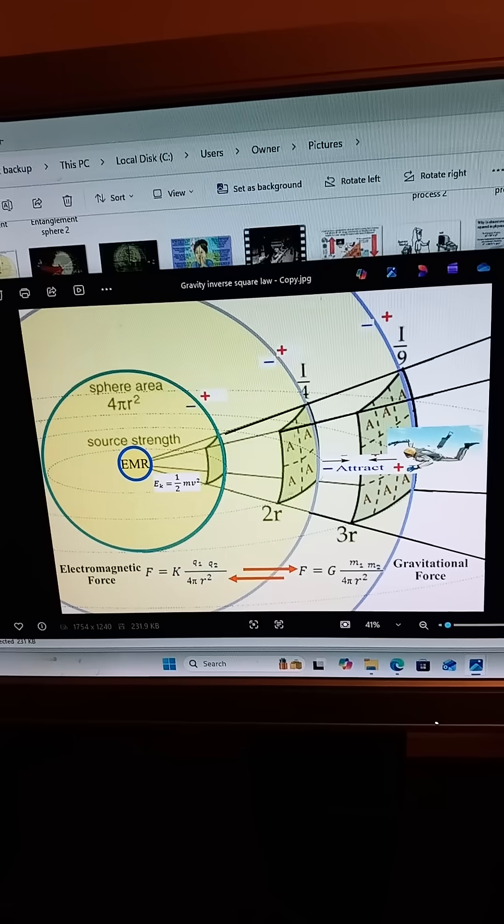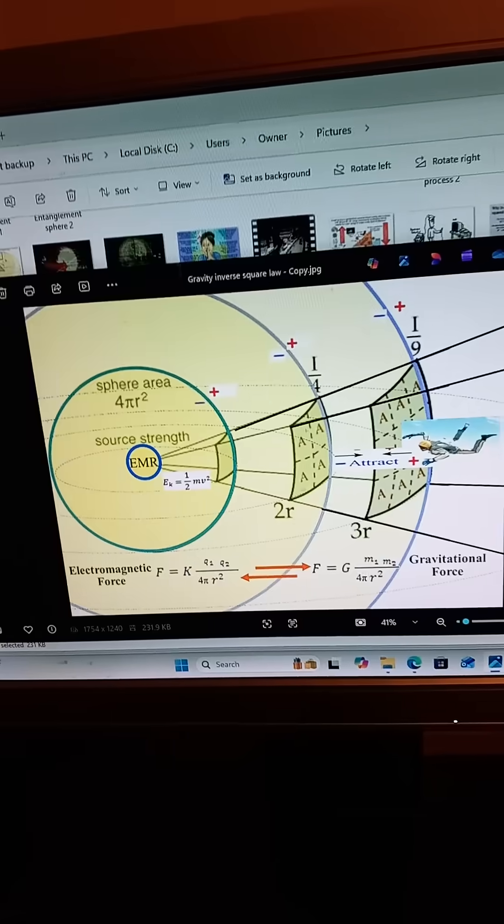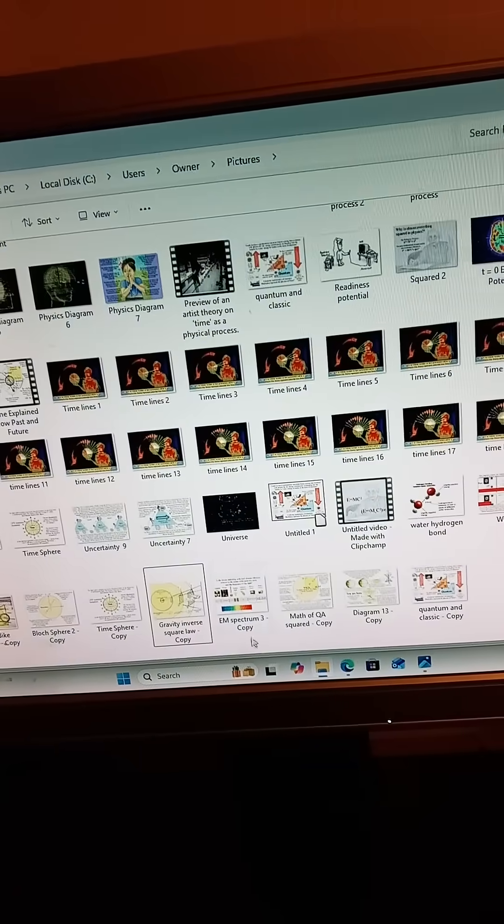Changing motion means re-phasing many interactions at once. The more matter something has, the harder it is to change its rhythm. That resistance is mass.